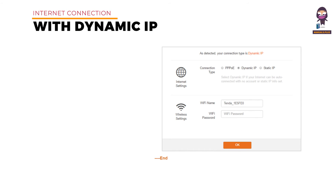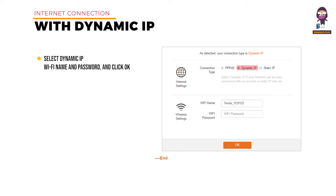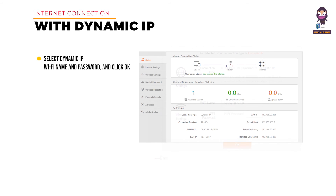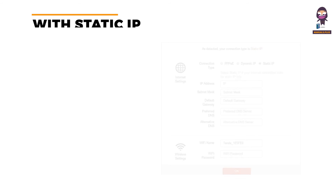Setting up an internet connection with a dynamic IP address: select Dynamic IP, set a Wi-Fi name and password, and click OK. After the proceeding procedure, the status page appears. If you can surf the internet, it is displayed at connection status — the internet is accessible.